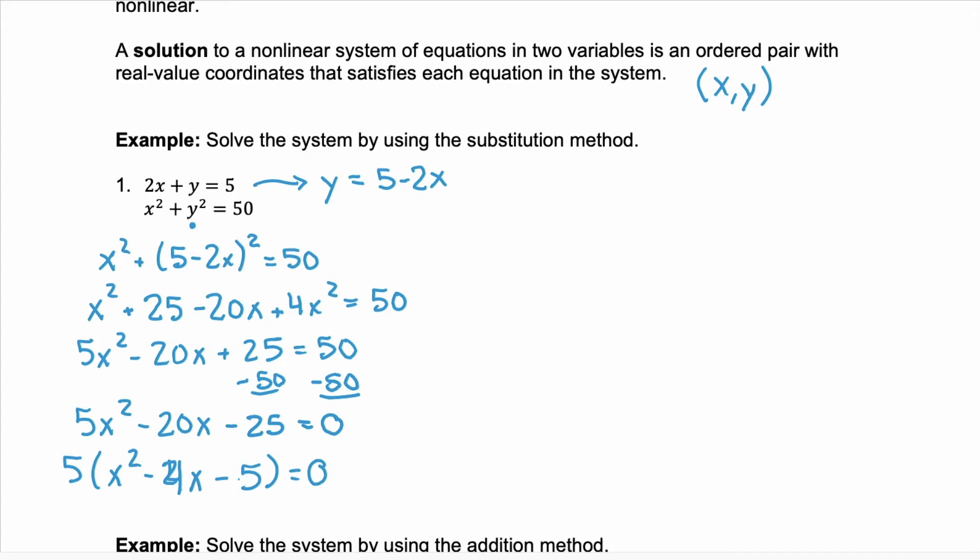Now we can factor that trinomial. Two numbers that multiply to negative 5 but add to negative 4. Well, those would be x minus 5 times x plus 1. Negative 5 times 1 is negative 5. Negative 5 plus 1 equals negative 4.